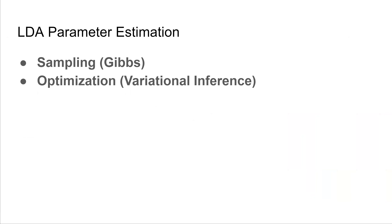We have discussed how to generate a corpus given the model parameters. Now we are interested in reversing the process: how do we determine the model parameters given the corpus? We cannot solve this problem exactly — it is intractable. Therefore we must approximate a solution. We discuss two approaches: the first uses sampling to perform inference, and the second uses optimization to perform inference.